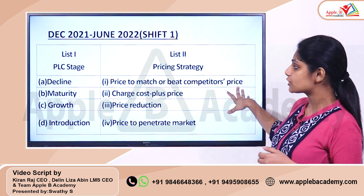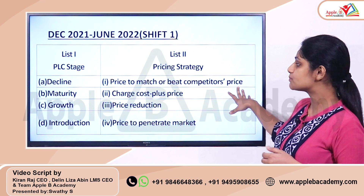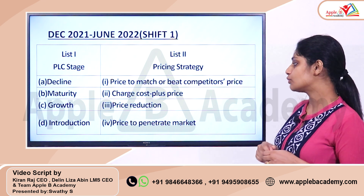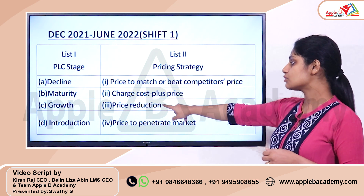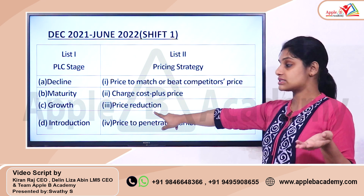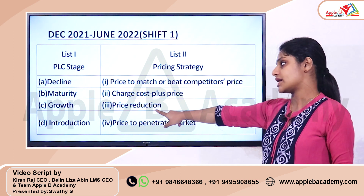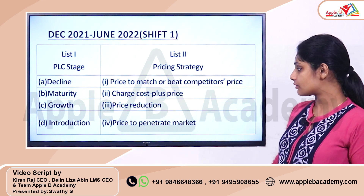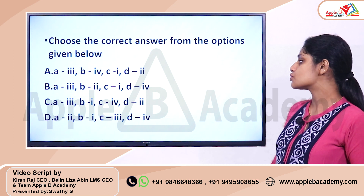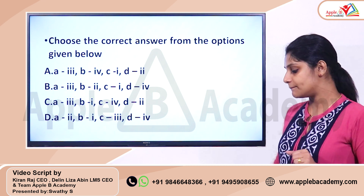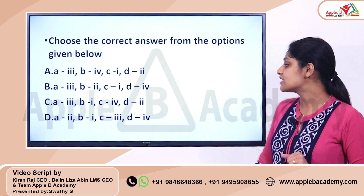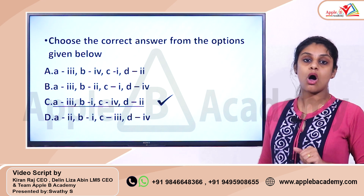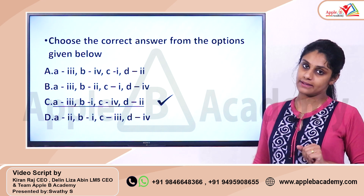So, you can actually match B with 1. Finally, in decline stage, what you will do? You need to cut your price, that means price reduction. So, A3, right? So, A3, B1, C4, D2. So, the correct answer for this question is option C.